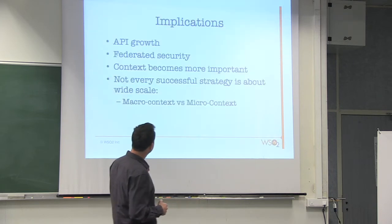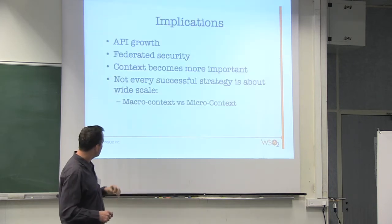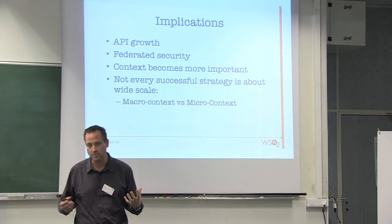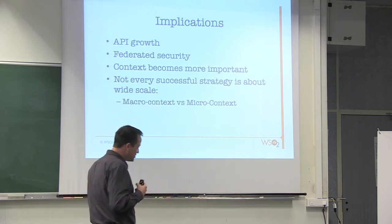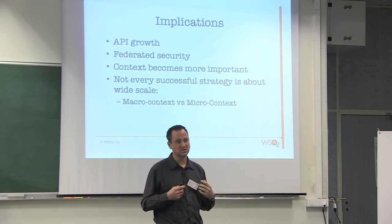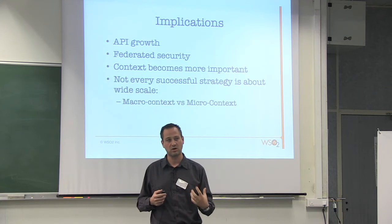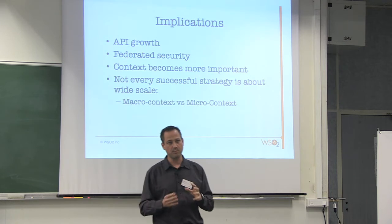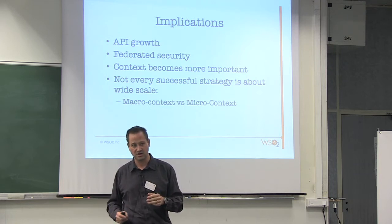Some of the implications of these two things together: we've seen the huge growth in APIs. But the other interesting thing is how to apply context to your API — not just macro context, but potentially micro context. How can you think about the long tail of usage? I'll give some examples of that later.